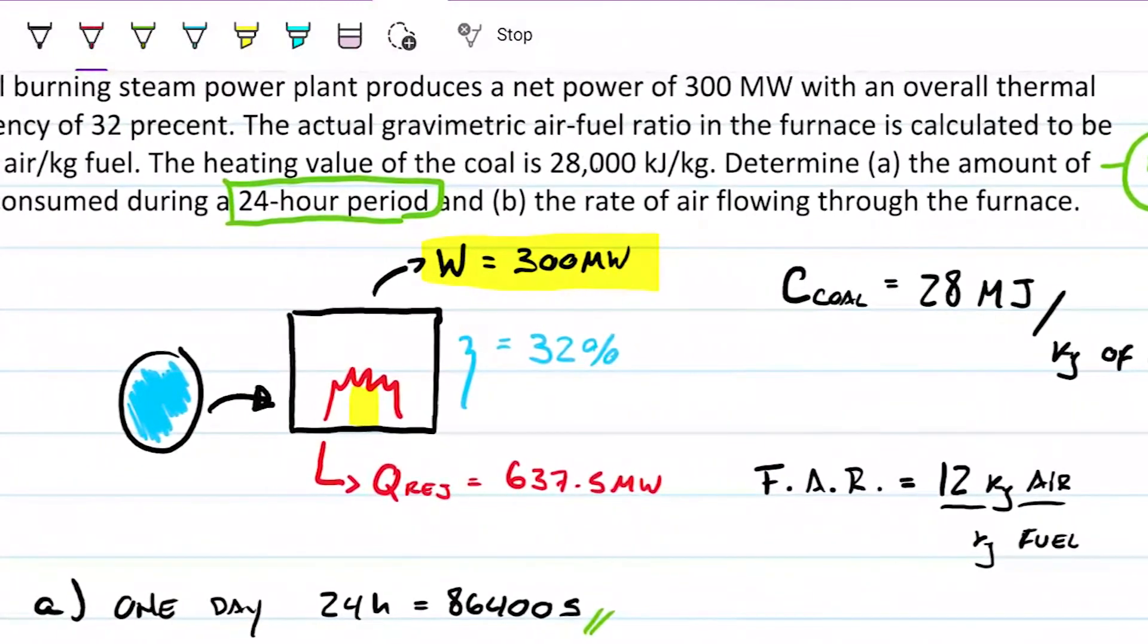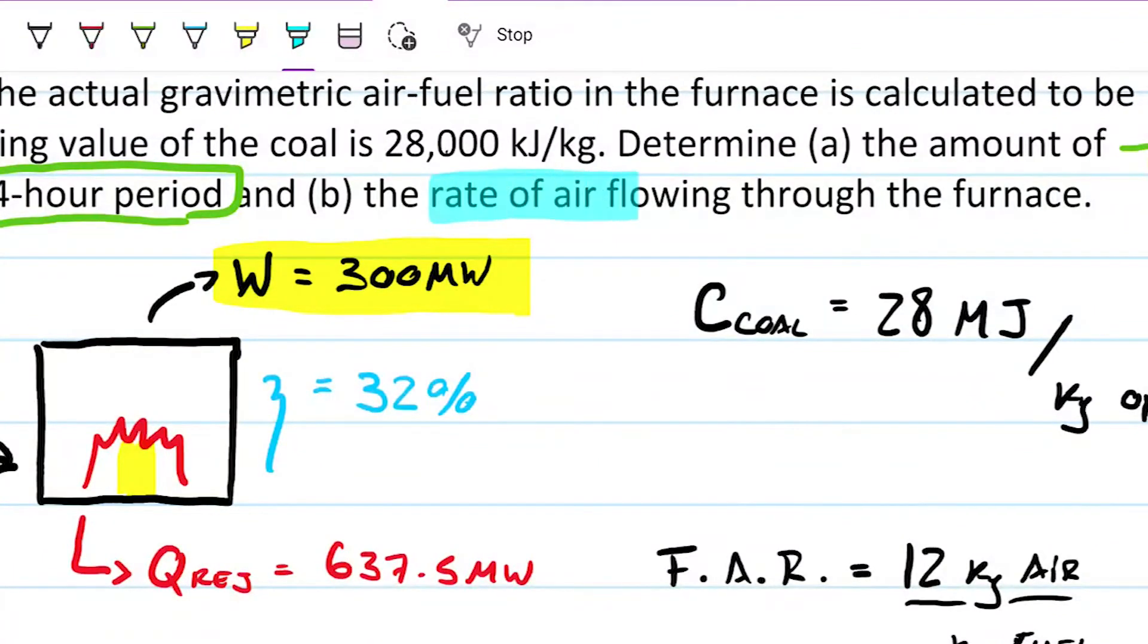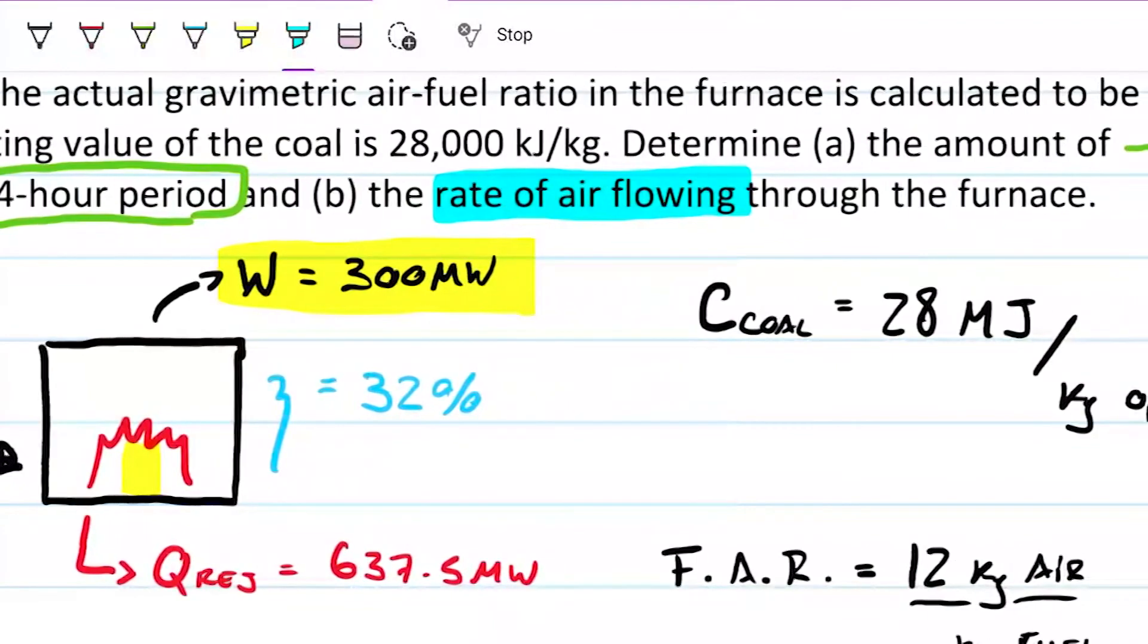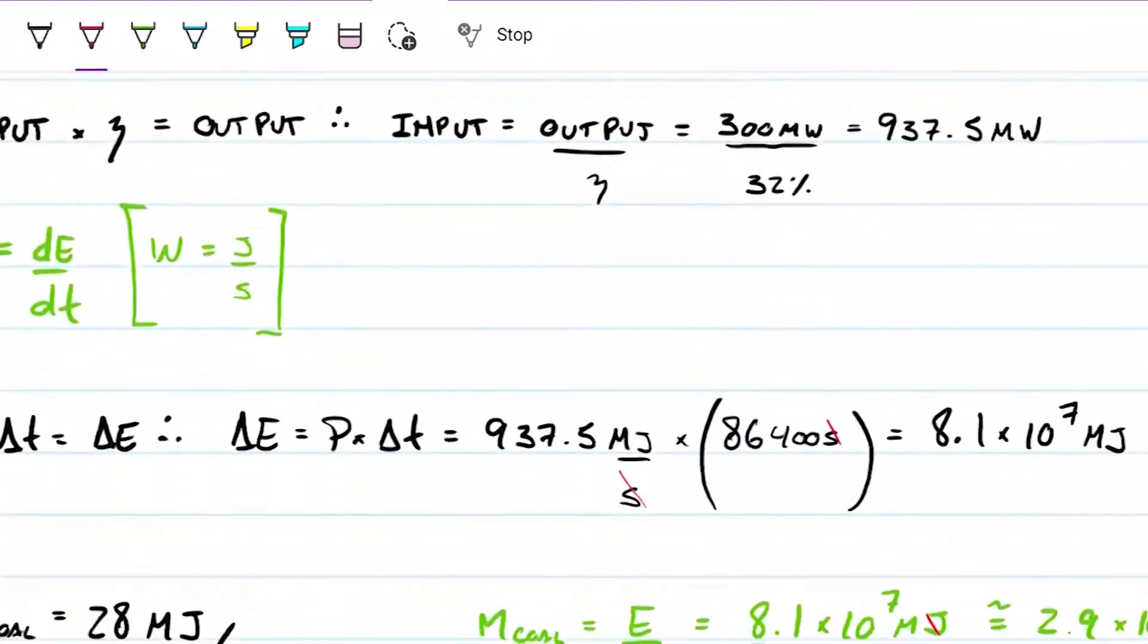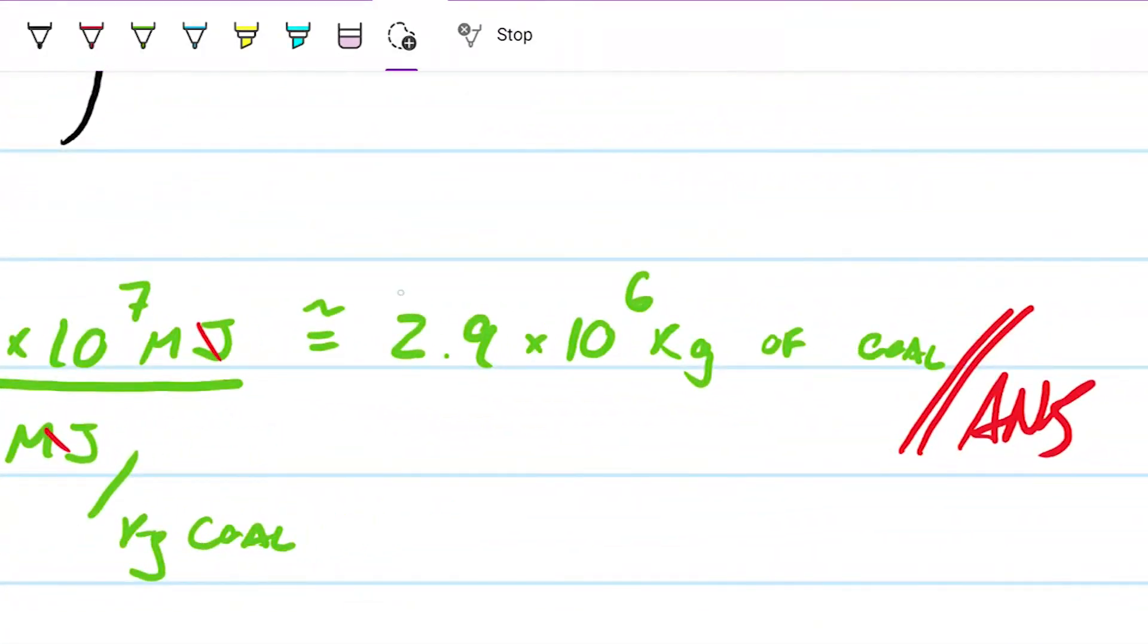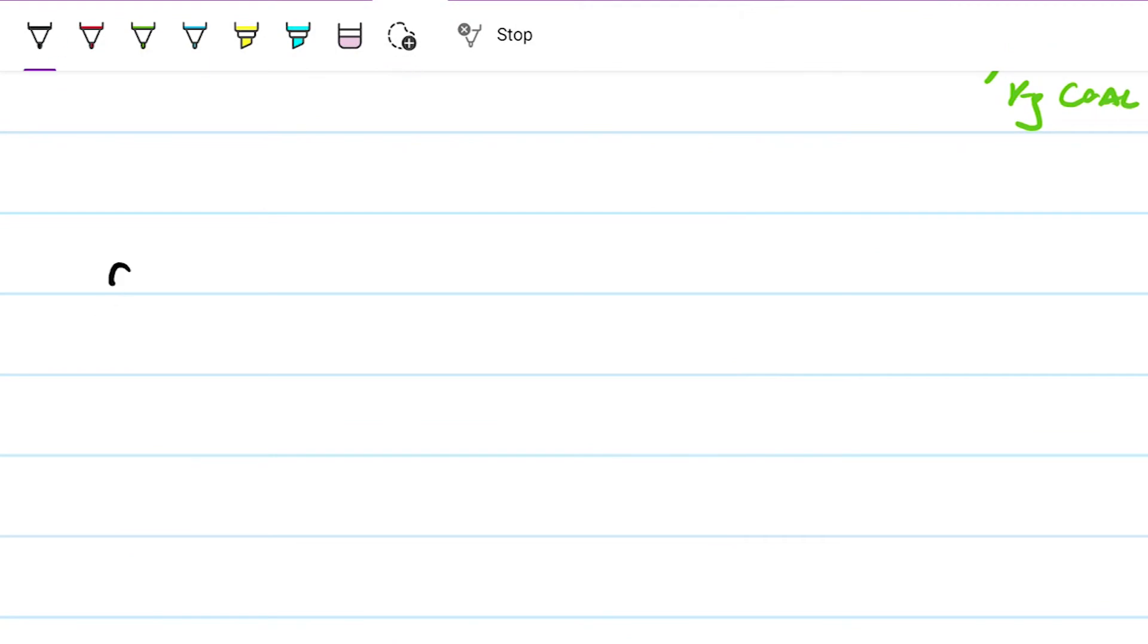Part B then asks us, what is the rate of air flowing through the furnace? Well, that's easy, because we know the ratio between the amount of coal and the amount of air. So if we know the amount of coal, we know the amount of air. So note that this is asking us, what is the rate of air flowing through the furnace? Not the amount per se. So they're not asking us what is the amount of kilograms of air. No, that's not what they want. They want the rate, so they want kilograms per unit of time. I'm going to go with seconds because it's SI. So I need to find what is the amount of kilograms per second. So I'm going to start simple, and I'm going to say, I know the amount of coal that I need. I know this is for a 24-hour period.